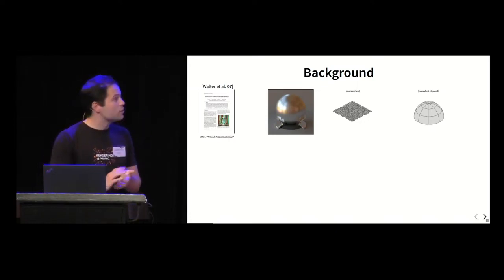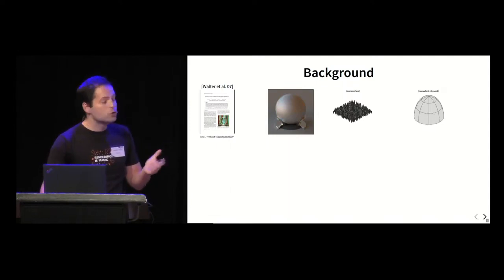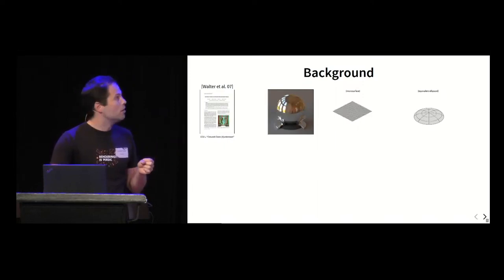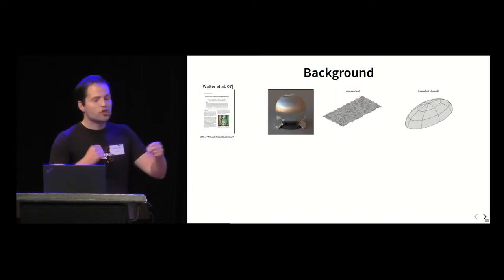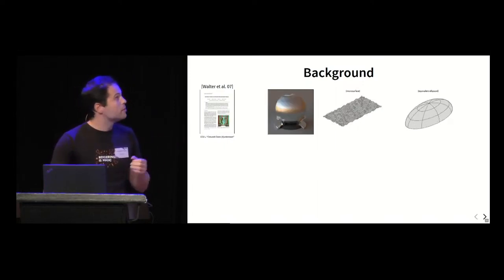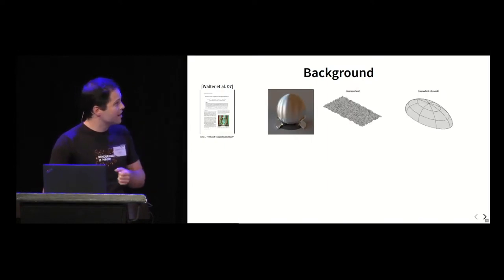There are some very nice insights you can get from this theory. For instance, if you stretch the surface, you'll get a rougher appearance, and conversely, if you flatten it, you'll get a shinier appearance. What you can also do is stretch it anisotropically to create some brushed metal effects such as this and this.